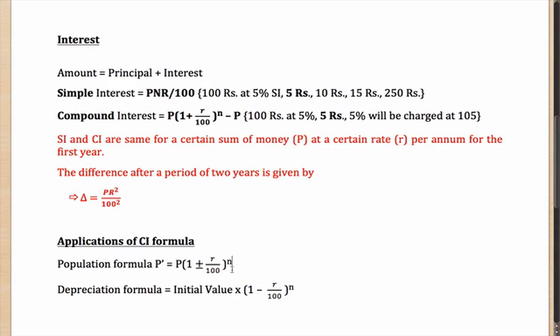It is not necessary that the population would increase. For humans it is, but for other animals, let's say for tigers, if it is falling at the rate of R, then your formula will become P into 1 minus R by 100 to the power N. Essentially all you need to take care of is the sign of R, whether it is plus or minus. The formula is analogous to compound interest.